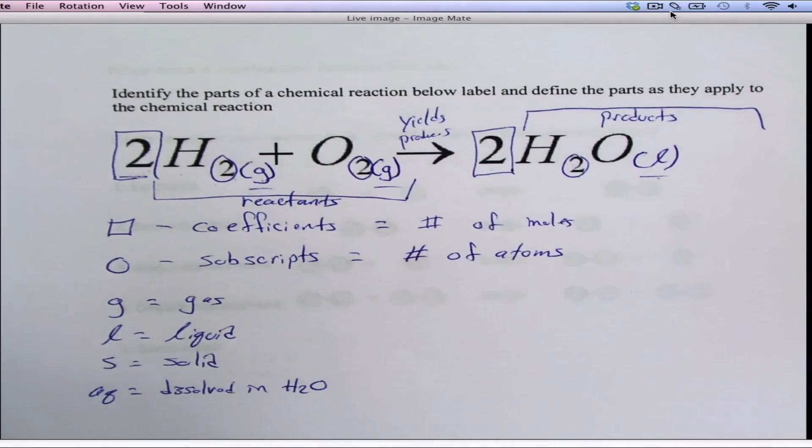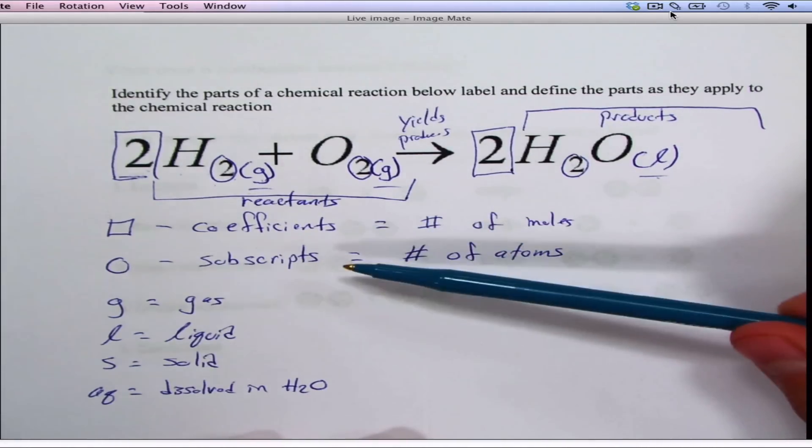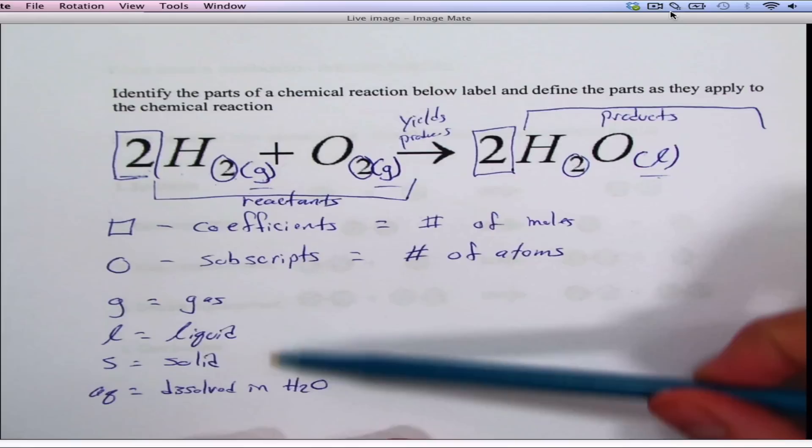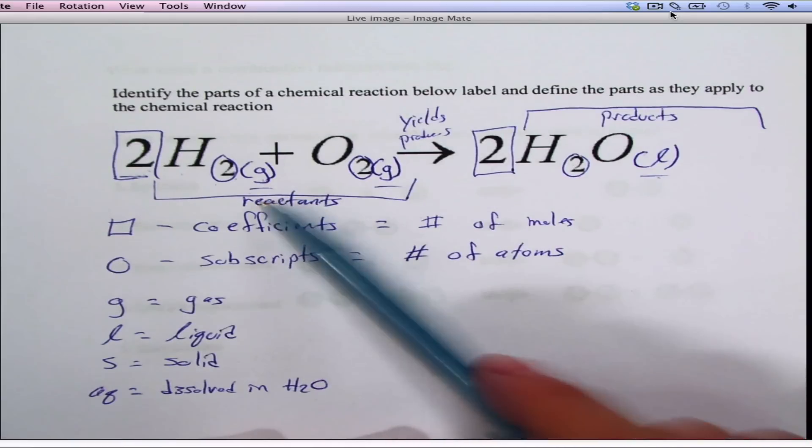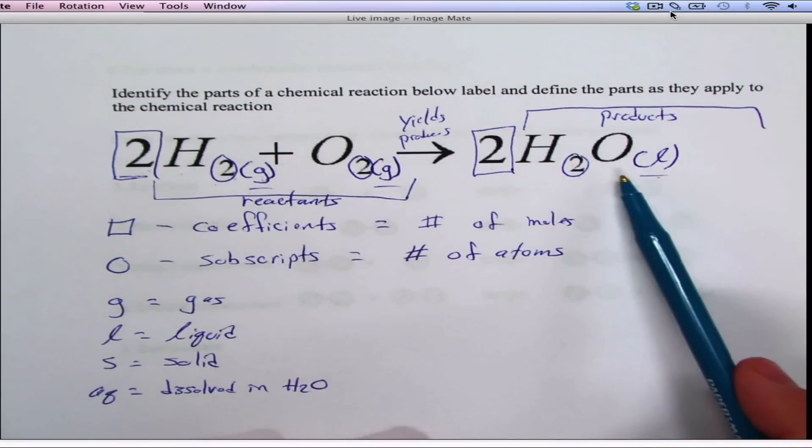So the basics you need to know: what the coefficients do, what the subscripts do, what the states mean, the reactants, the products, how to read a chemical reaction.